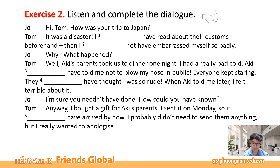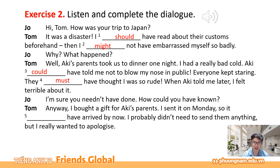Were you able to complete all the gaps? Now let's check the answer. Number one: I should have read about their customs beforehand — Tôi đáng lẽ ra nên đọc về những cái phong tục của họ trước khi đi. Number two: then I might not have embarrassed myself so badly — Thì có lẽ tôi đã không gây xấu hổ cho bản thân mình đến như vậy. Number three: Aki could have told me not to blow my nose in public — Aki có thể đã nói cho tôi đừng có xì mũi ở nơi công cộng. Number four: they must have thought I was so rude — Họ chắc chắn đã nghĩ rằng tôi thật là bất lịch sự. Number five: so it should have arrived by now — Thì có thể nó đã nên đến nơi vào lúc này rồi.